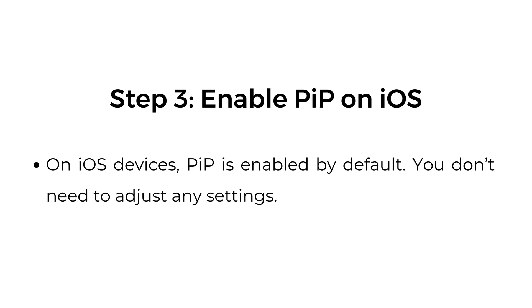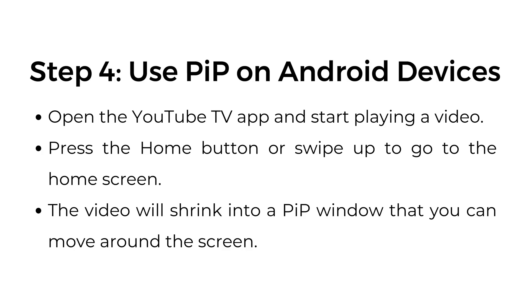Step number three: enable PIP on iOS. On iOS devices, PIP is enabled by default. You don't need to adjust any settings.